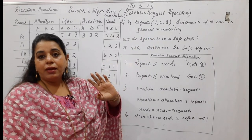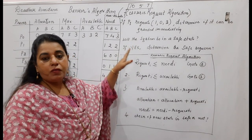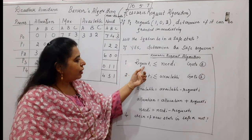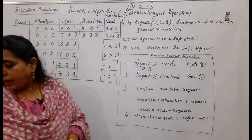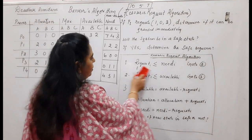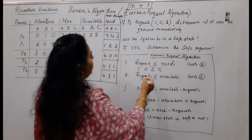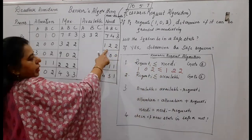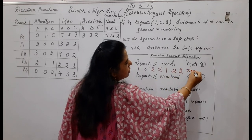The resource request algorithm step 1: check if Request(i) ≤ Need(i). P1 requests 1,0,2 and its need is 1,2,2. The system checks: is 1 ≤ 1? Yes. Is 0 ≤ 2? Yes. Is 2 ≤ 2? Yes — it is true. If true, proceed to step 2.